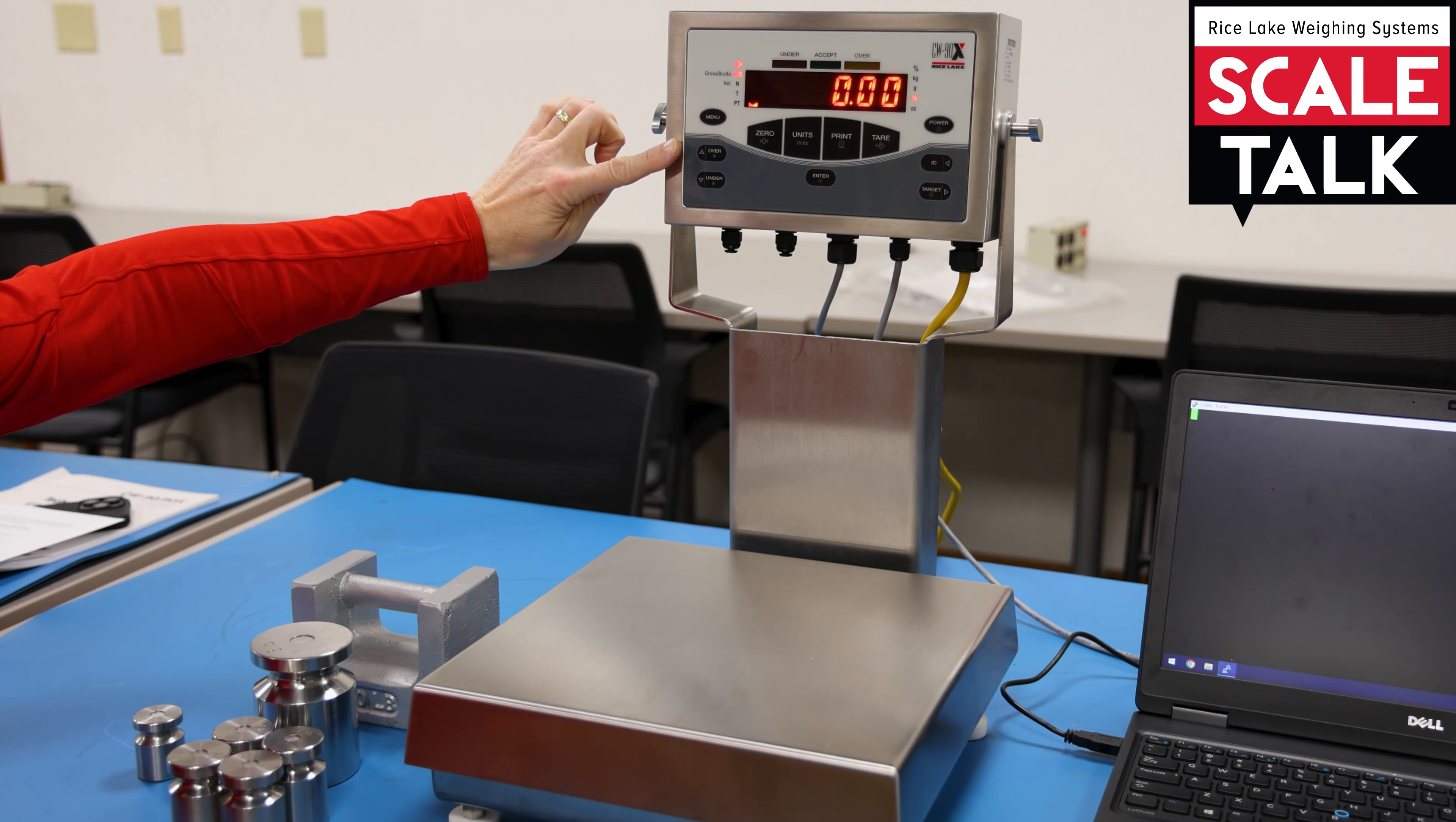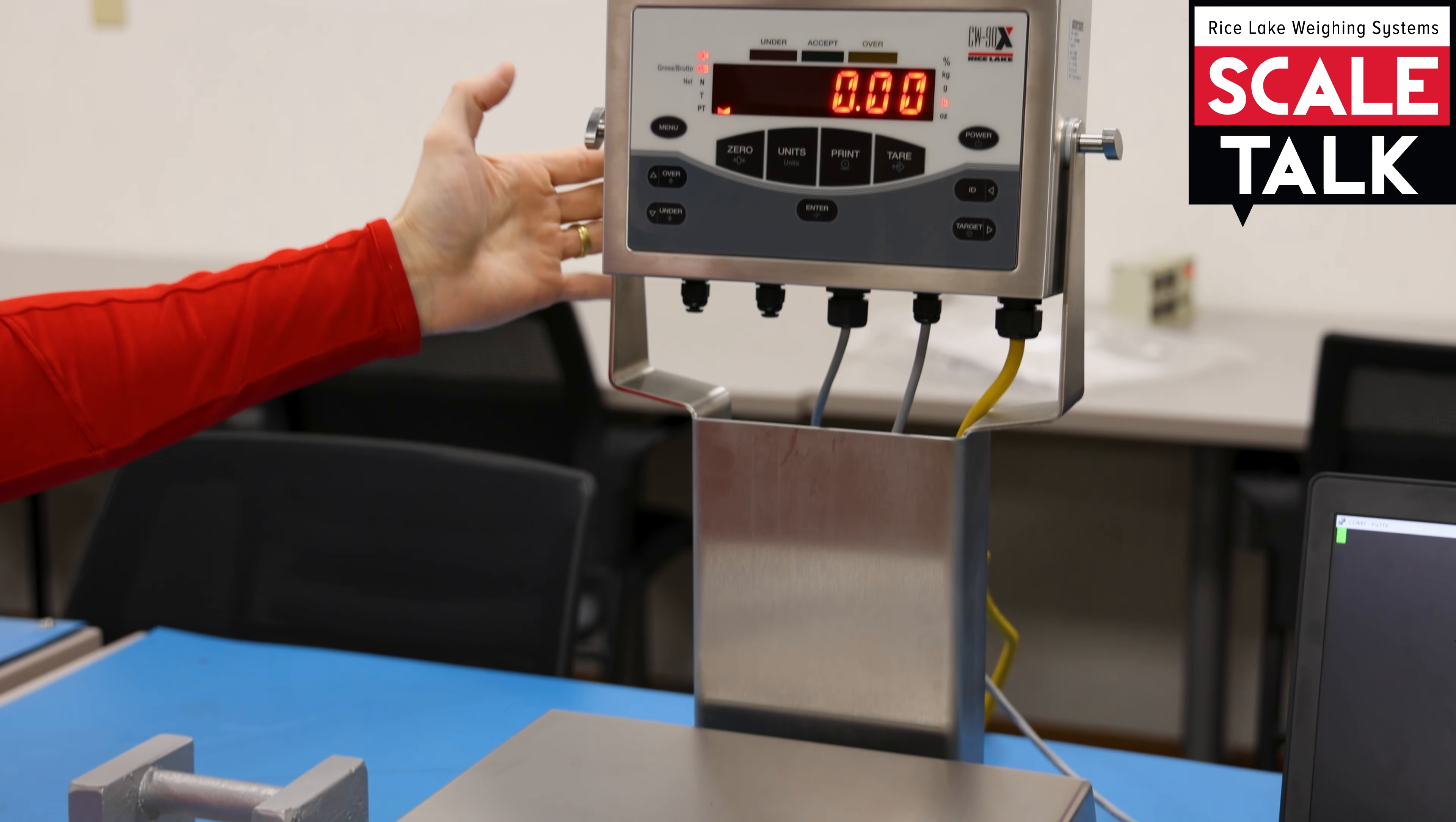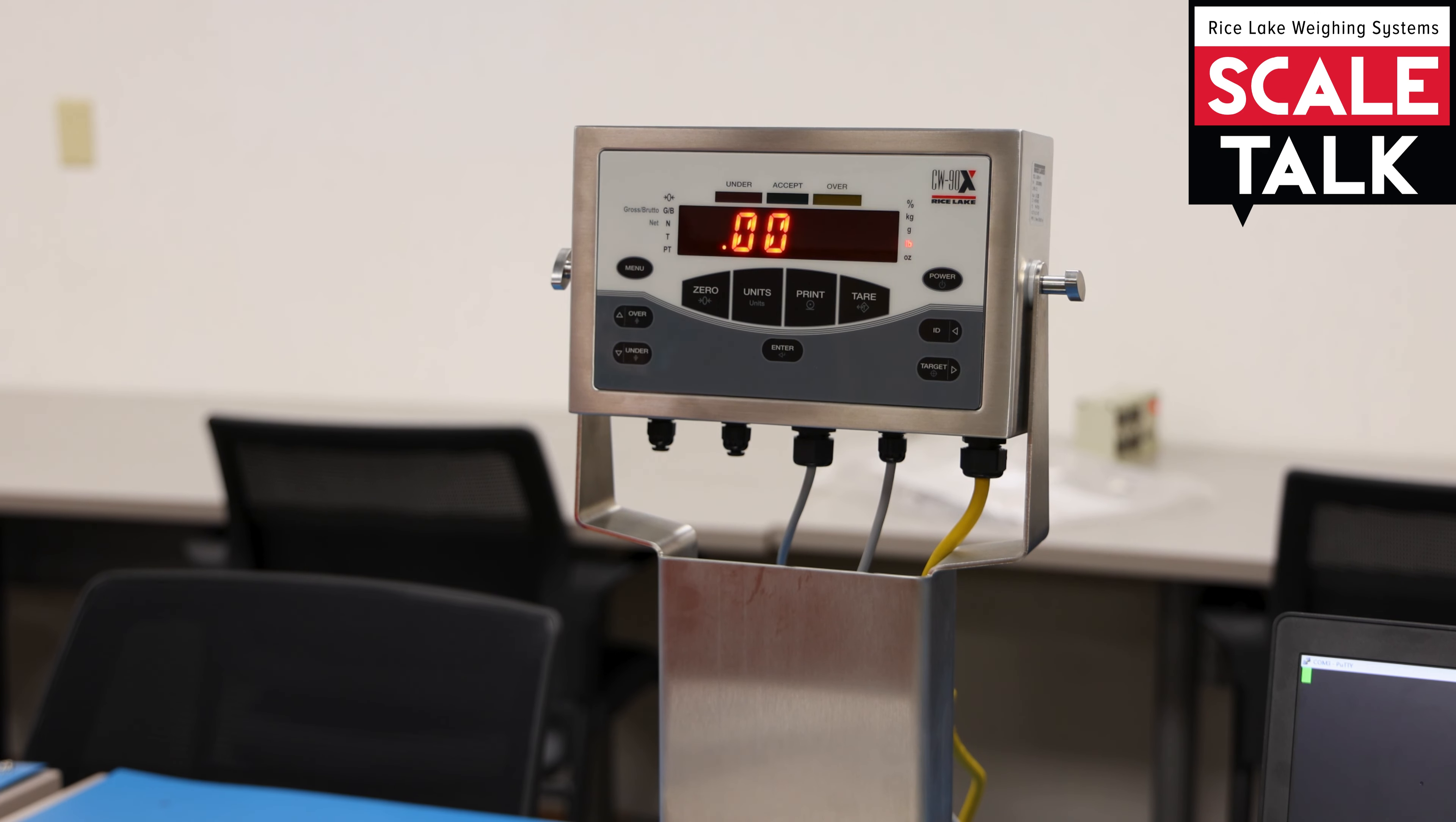And so what we're going to do here, you'll see on the left hand side of the display, the overlay, we have an over and an under button. And so I'm going to start by pressing the over button. You see that the over lights begin to flash because here I'm going to set the weight value for the over condition.